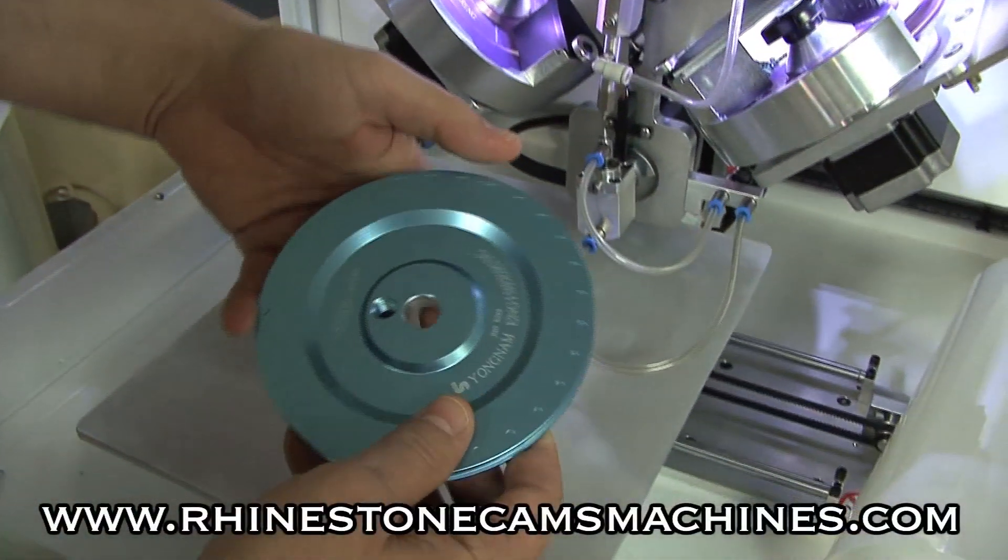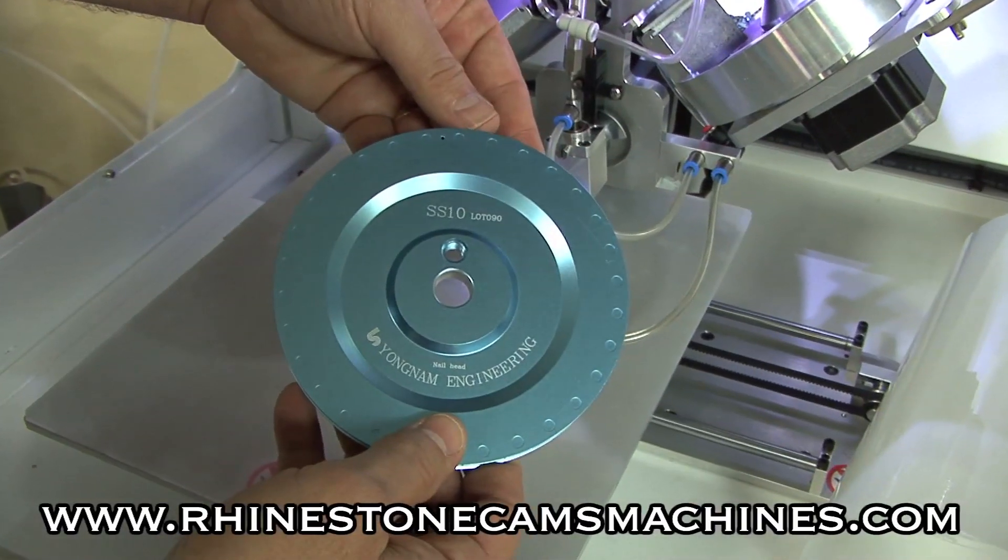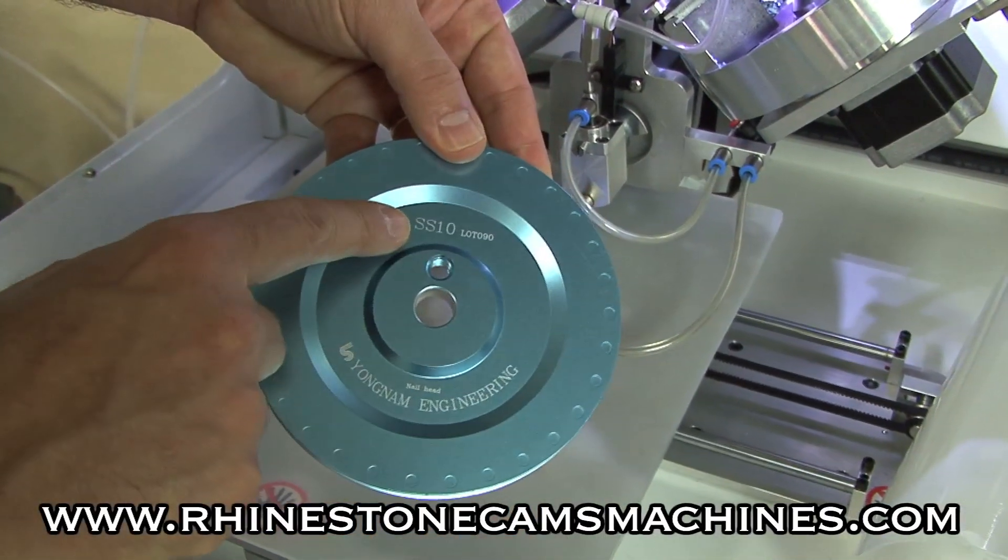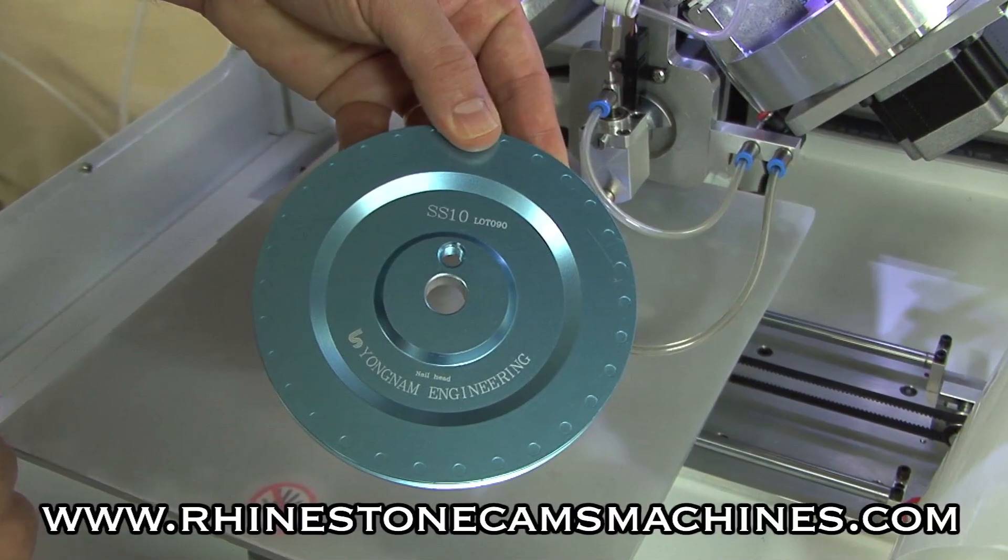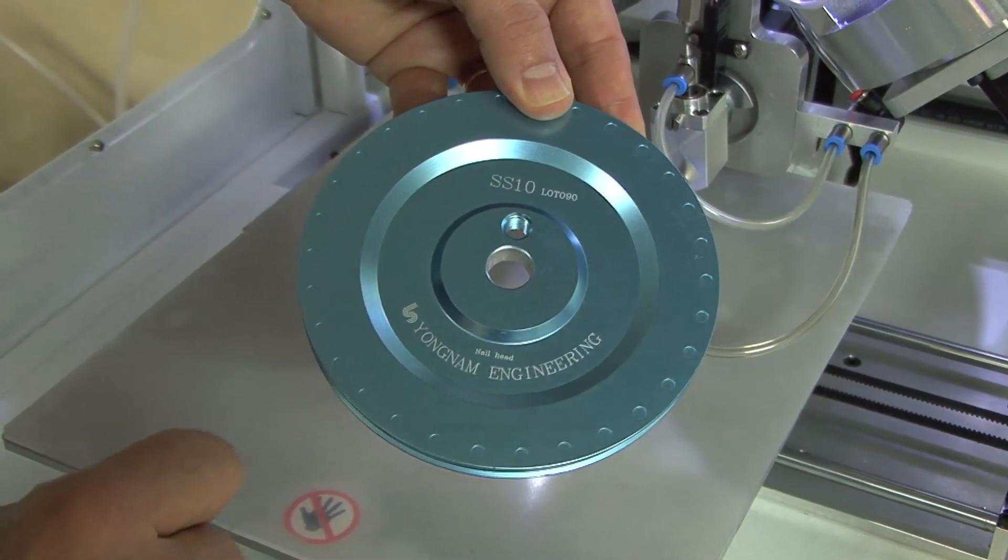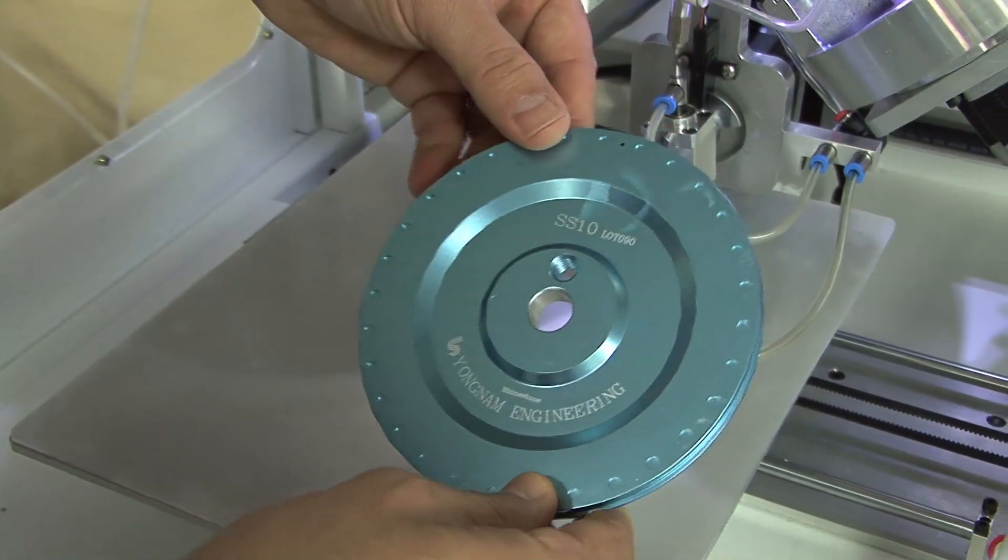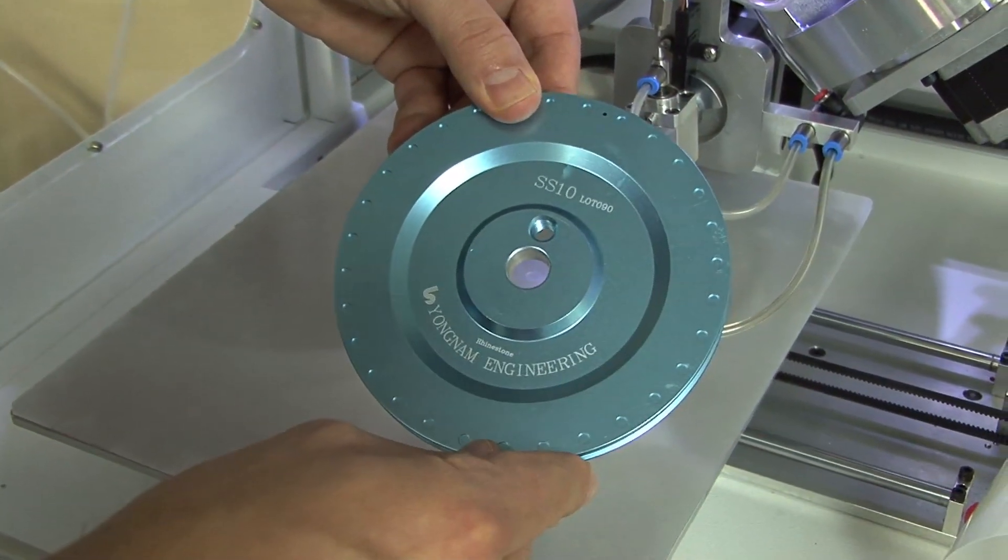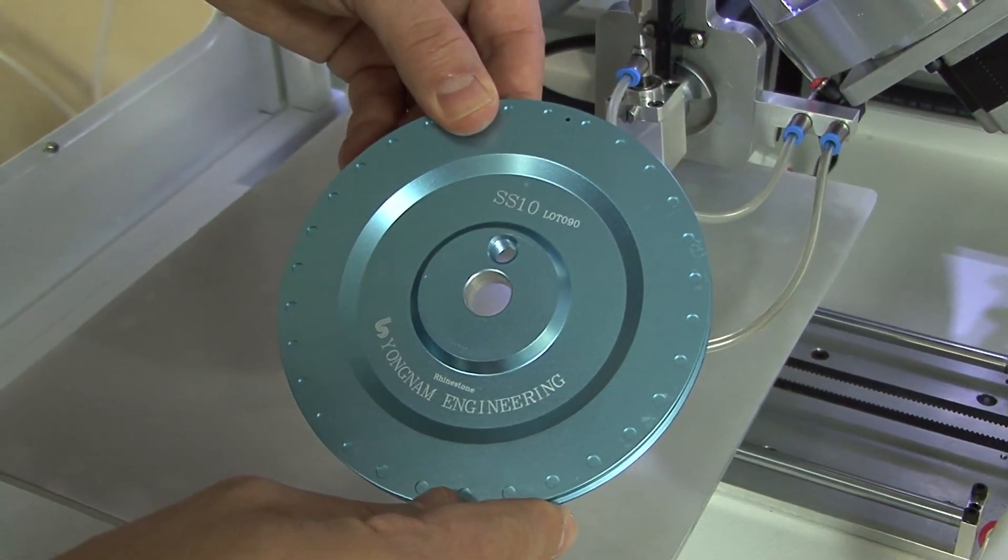I'm just going to show you one of these now. There are two sides to every feeder plate. First of all you'll see the size of the stone that it'll take. One side is a little bit more shallow and you can put a hotfix nail head in there, or you flip it over and it's a little bit deeper and that is for rhinestones or rhinestuds.